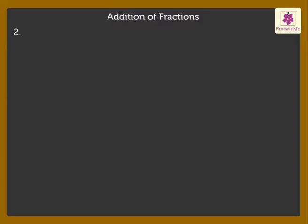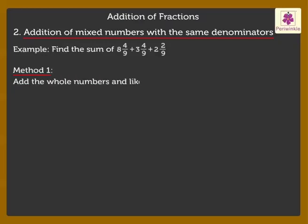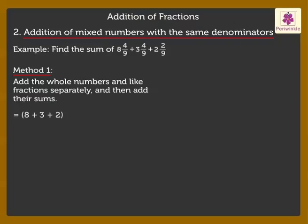Next is 2. Addition of Mixed Numbers with the Same Denominators. Find the sum of the given mixed numbers. We can use two methods to add mixed numbers with the same denominators. Method 1: we add the whole numbers and like fractions separately and then add their sums. Thus, we get 8 plus 3 plus 2 plus 4 upon 9 plus 4 upon 9 plus 2 upon 9, which is equal to 13 plus 10 upon 9.